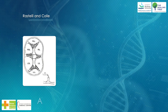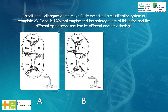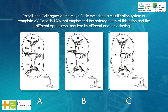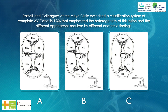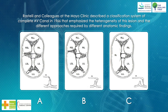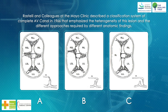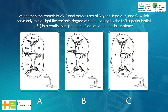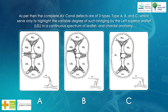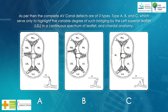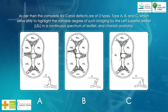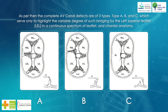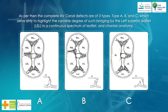1966 – Rastelli and colleagues described a classification system of complete AV canal. 1975 – Trussler described the two-patch technique. Rastelli's classification emphasized the heterogeneity of this lesion and the different approaches required by different anatomic findings. Complete AV canal defects are classified as type A, B, and C, which highlight the variable degree of bridging by the left superior leaflet (LSL) in a continuous spectrum of leaflet and caudal anatomy.